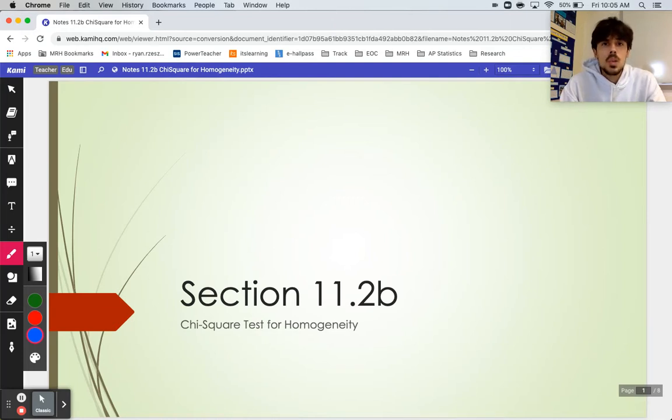All right, so last video we reintroduced the idea of a two-way table going back to chapter one. Remember that when we use two-way tables, we're usually comparing two different categorical variables to each other. That's what we're working towards here: how to define or analyze the relationship between two variables that are both categorical. We learned in the last video that this scenario is when you would use a chi-square test statistic.